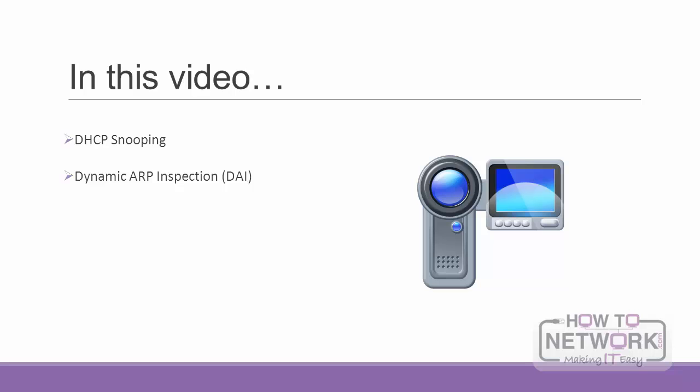In this video, we'll discuss two other security features: DHCP snooping and dynamic ARP inspection, that help us combat against some layer 2 attacks.